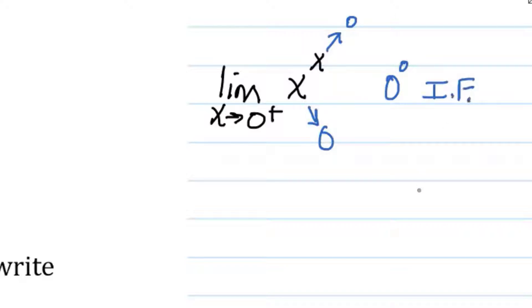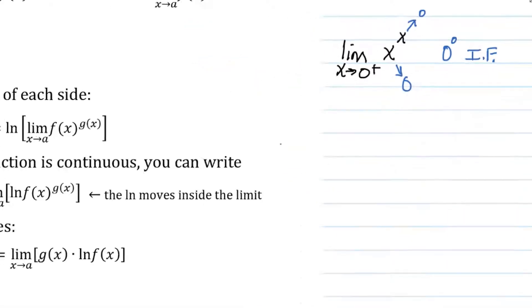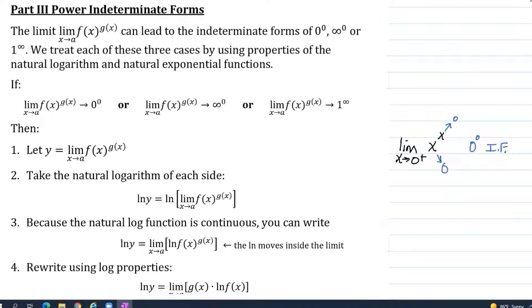When I write capital I, capital F, that's indeterminate form. This is one of the three forms we're going to use this procedure for: zero to the zero, infinity to the zero, or one to the infinity power.